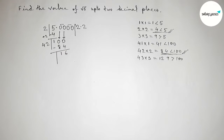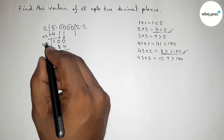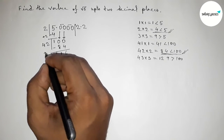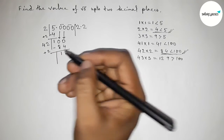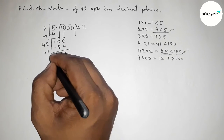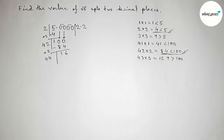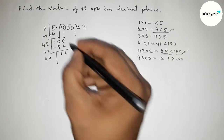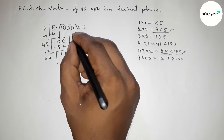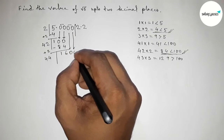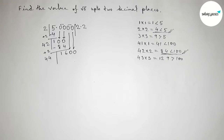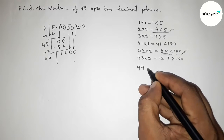Now the important step: the last digit of the current divisor is 2, so we add 2 to it: 42+2=44. Write down the remaining pair of zeros beside the remainder 16, giving 1600.